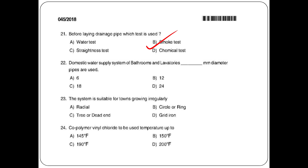We have to look at different types of tests. The next question: in a domestic water supply system of bathrooms and lavatories, how many mm diameter pipes are used? Options: 6, 12, 18, 24. The answer is 12 mm diameter pipes.